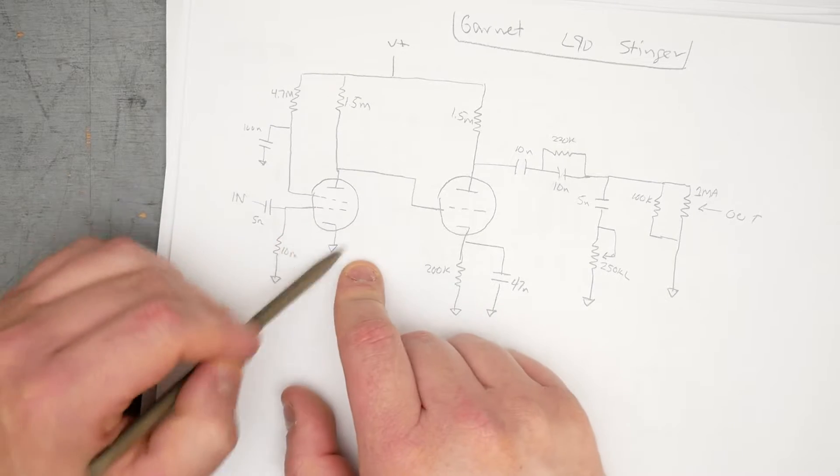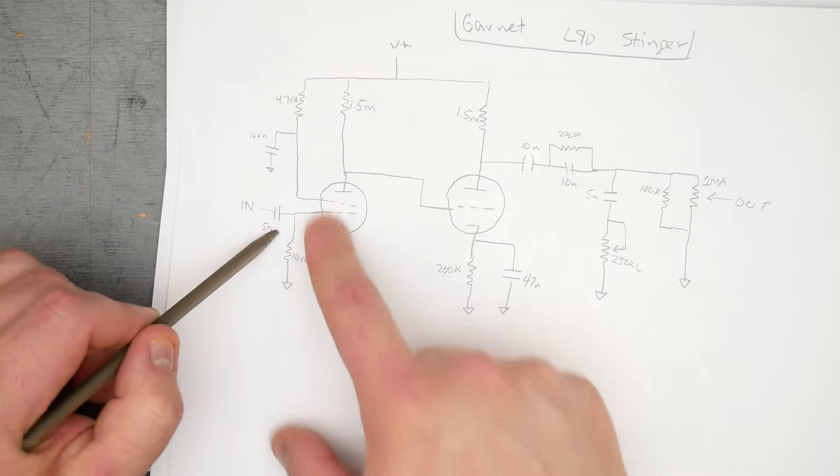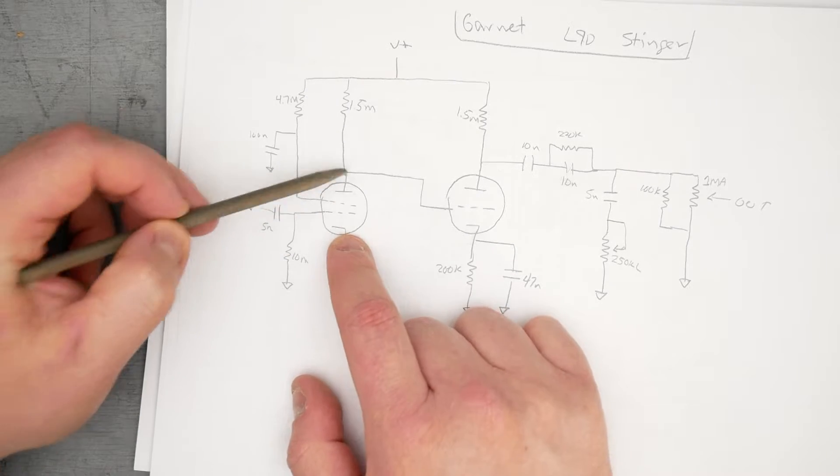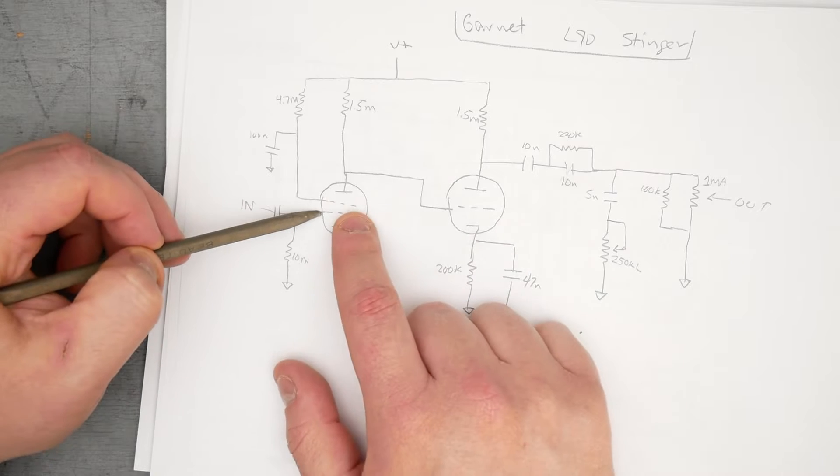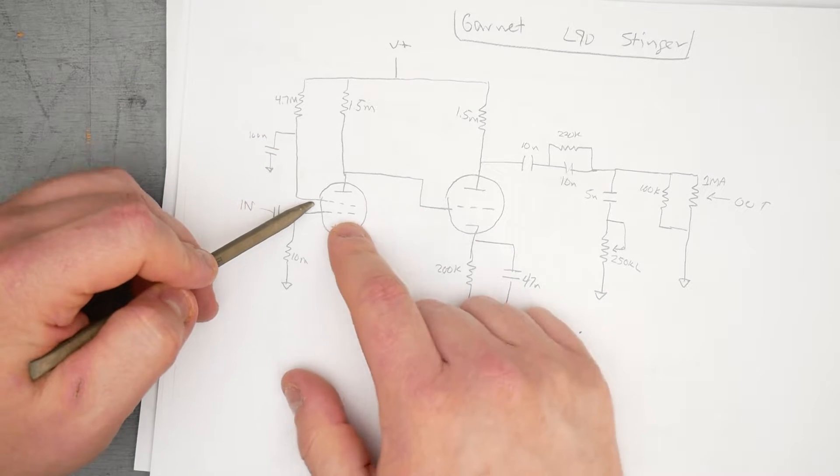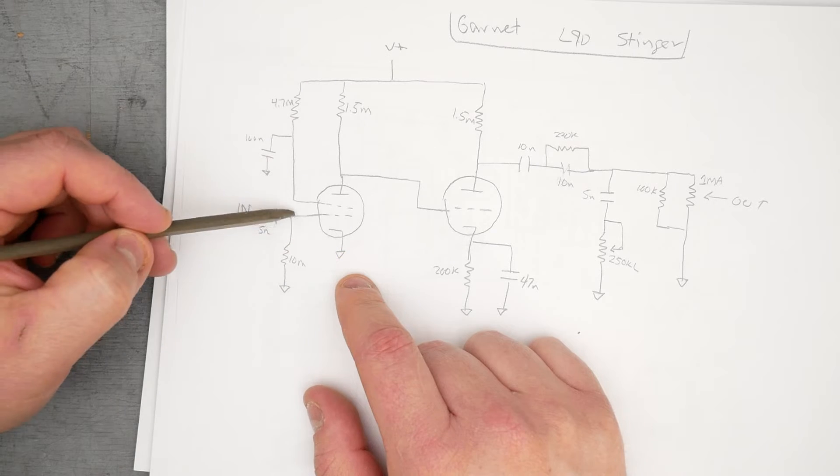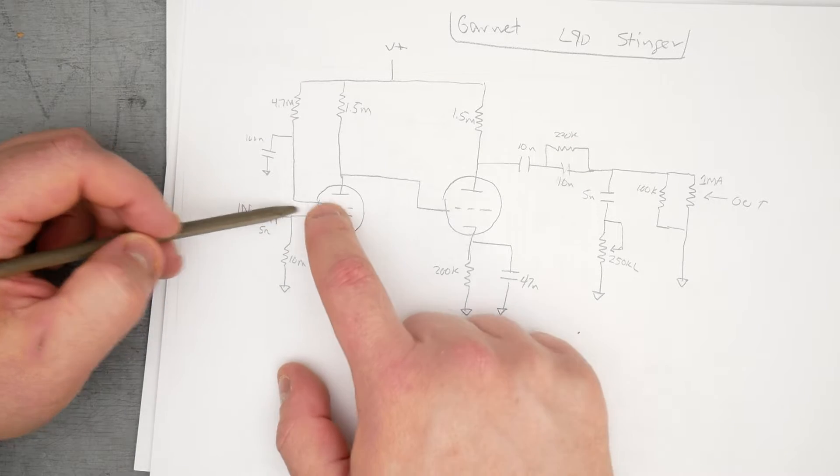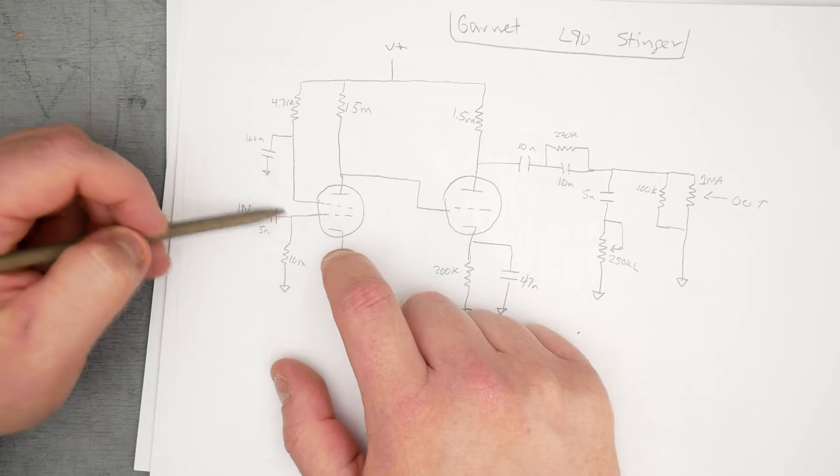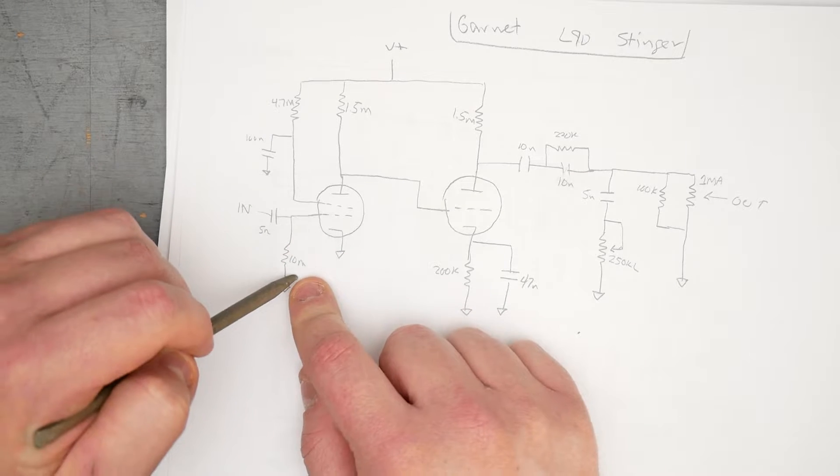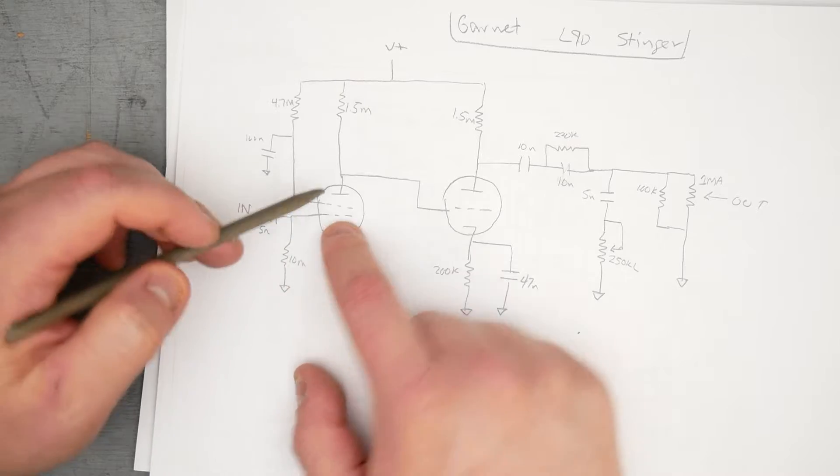We come in to a pentode. We have a 5 nanofarad input cap, a 10 meg resistor to ground, and then the cathode is grounded. This setup, if you're not familiar, is grid leak bias. As a consequence of all the electrons flowing from the cathode to the grid, some of them will collect on the plate. Normally this isn't an issue for standard cathode bias tubes, however in this case our cathode is directly grounded.